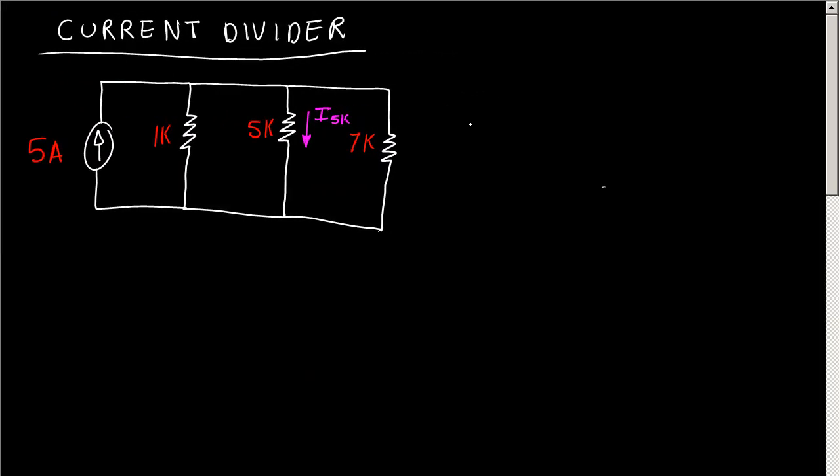So let's say you had this circuit of parallel resistors with a current source. How would you find the current through the resistor with 5 kilo ohms? The current divider formula says that the current through a resistor...